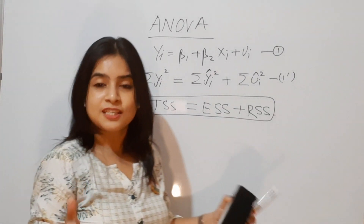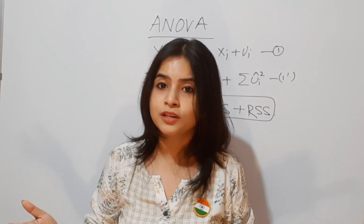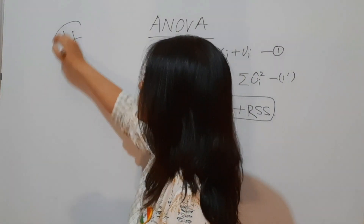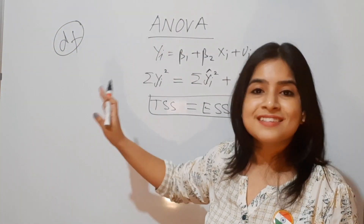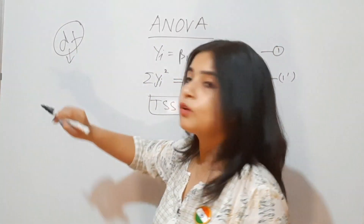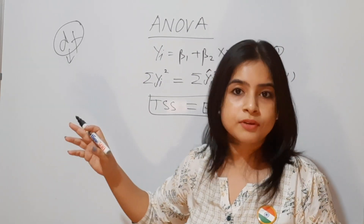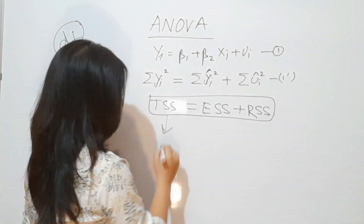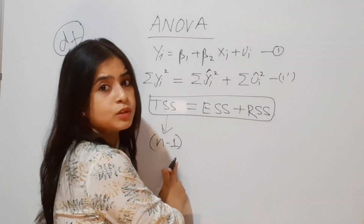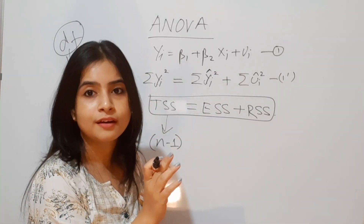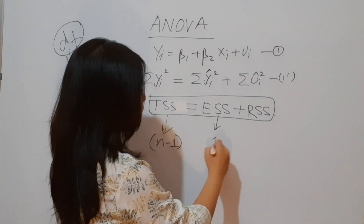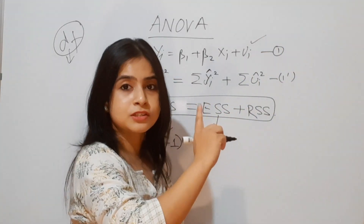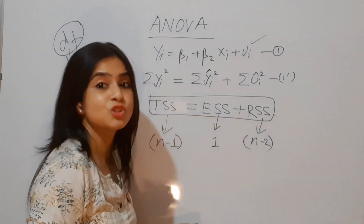Now we are estimating a regression model, so there is a concept of degrees of freedom. Degrees of freedom comes from the number of independent observations in the sample. The degree of freedom of TSS is n minus 1 — because the sample mean ȳ gets estimated. In ESS, the degree of freedom is 1. And RSS has a degree of freedom of n minus 2. These are true for the two-variable model, which is why I explained that model first.